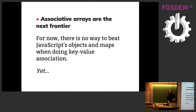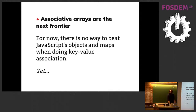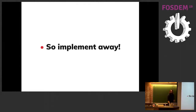The next frontier: nobody has yet been able to beat associative arrays in JavaScript — you cannot go faster than a map or an object for key-value association. But maybe with some clever tree structures or hashing schemes we may be able to beat some native optimizations on the JavaScript side. So please implement new data structures using all those tips, so we can all lead a happier life.